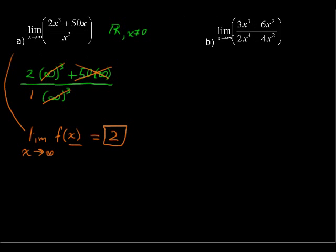Now in this next case, when the numerator of the rational function has a higher degree than the denominator — so this numerator degree is the third power, and the degree of the denominator is 4 — then what we're going to have is a larger number in the denominator.